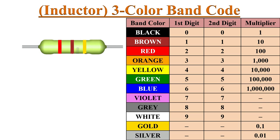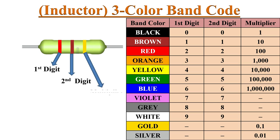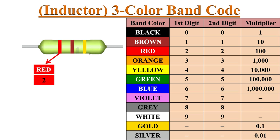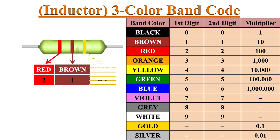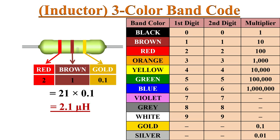If there are three color bands marked on an inductor, the first and second color bands represent the first and second digits of the value, and the third color band is the multiplier. Here red is 2, brown is 1, and the multiplier color gold is 0.1. Hence the inductance value is 2.1 micro-Henrys.